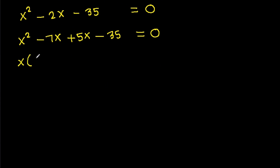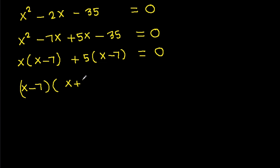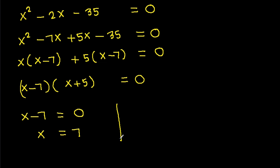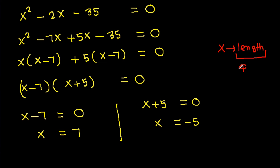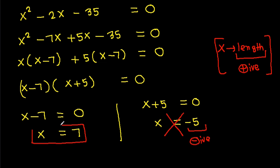Taking x common from the first two terms gives x(x − 7), and taking 5 common from the last two terms gives 5(x − 7). So (x − 7)(x + 5) = 0. Either x = 7 or x = −5. Since x is a length, it must be positive, so x = 7.